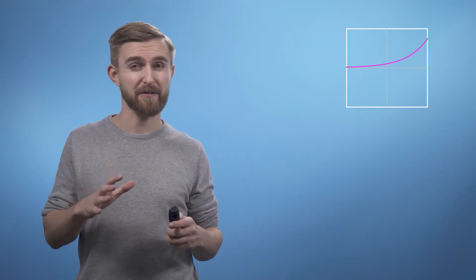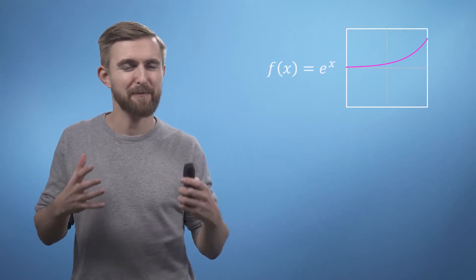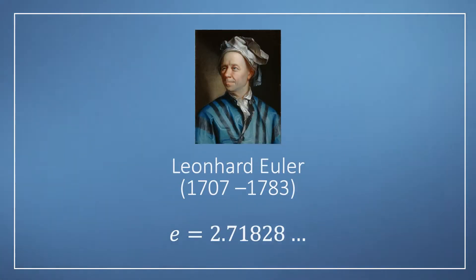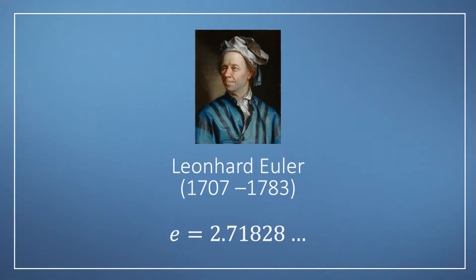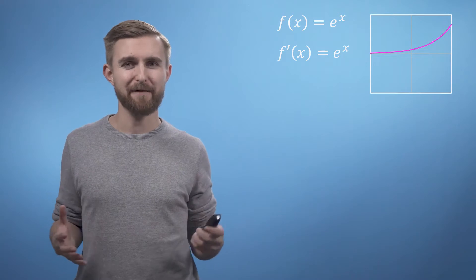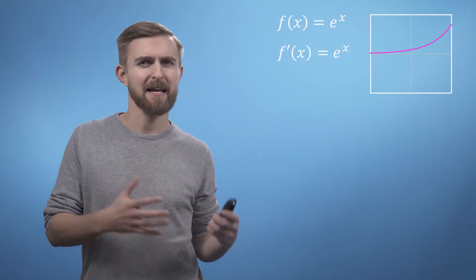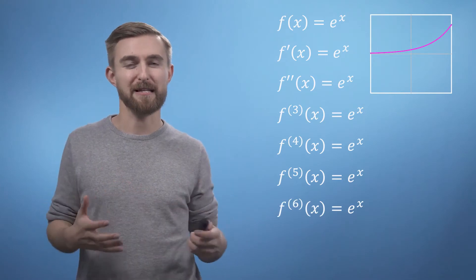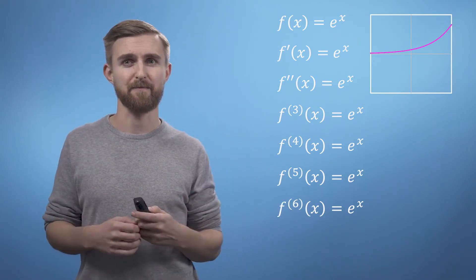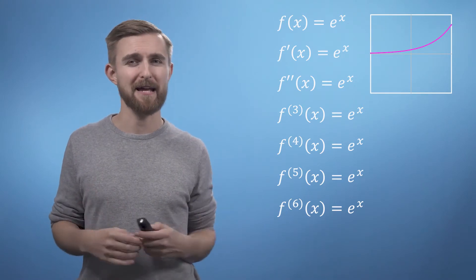However, besides the zero function, there is only one function that will satisfy all our demands. This is the exponential function, e to the x, where e is Euler's number, named after the 18th century mathematician. The number e, which is approximately 2.718, is very important for the study of calculus. But more than that, e, like pi, turns up all over mathematics and seems to be written all over the fabric of the universe. As differentiating e to the x gives us e to the x, we can just keep differentiating this thing as many times as we'd like and nothing is going to change. This self-similarity is going to come in very handy.